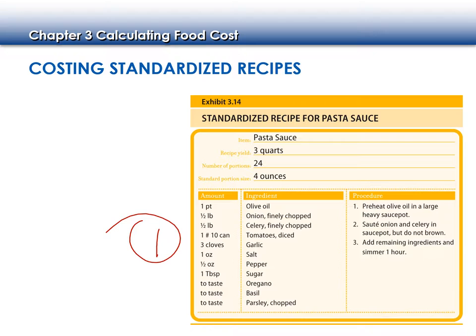First and very important is the name of what we're making — today it's pasta sauce. The yield tells us how much it makes: three-quarters. It also tells us our portions — we should get 24 servings out of this recipe. We need to know how many servings because we know how much we're selling this pasta for and we want to make sure we're covering all of that cost. Our portion size is 4 ounces.